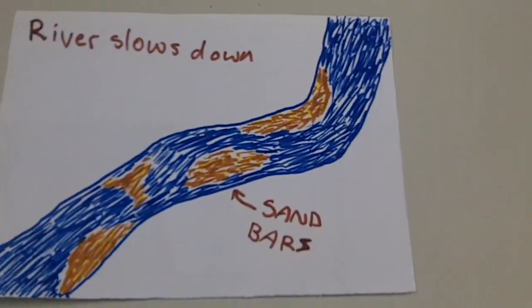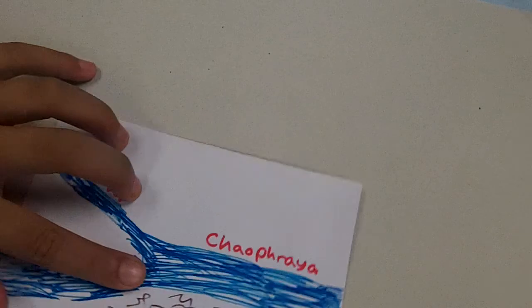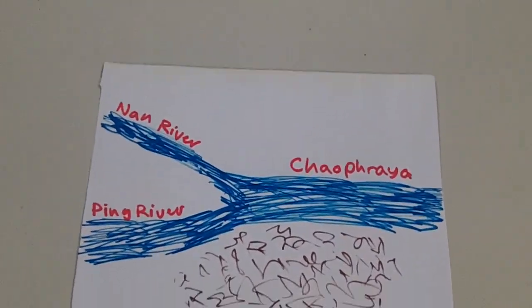The river slows down and that creates sand bars. The rivers join into a larger river.